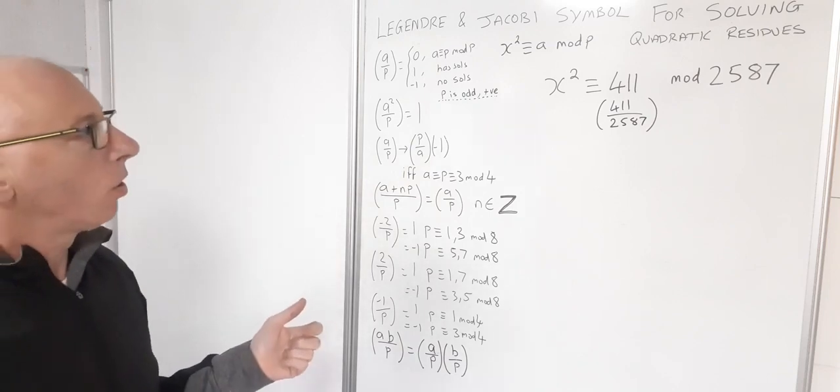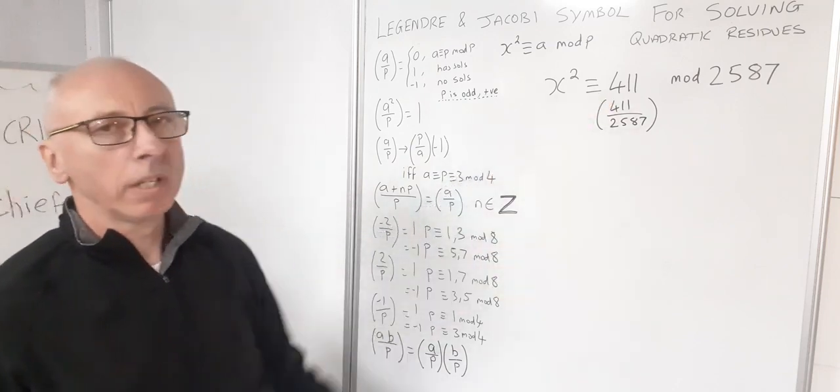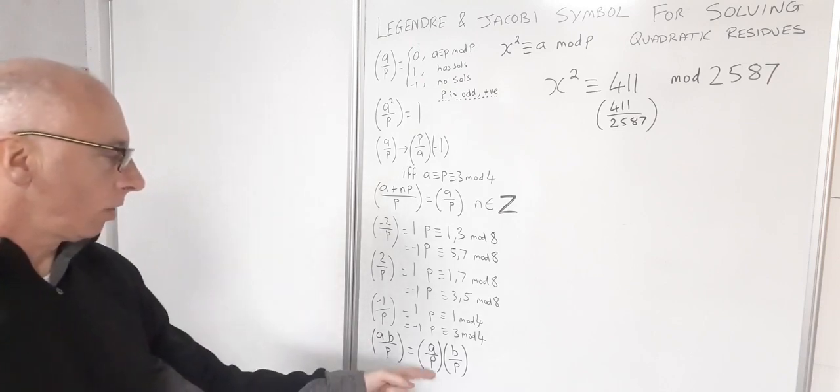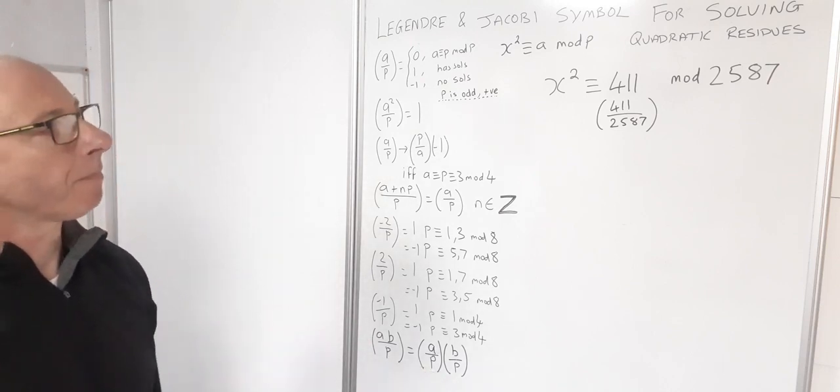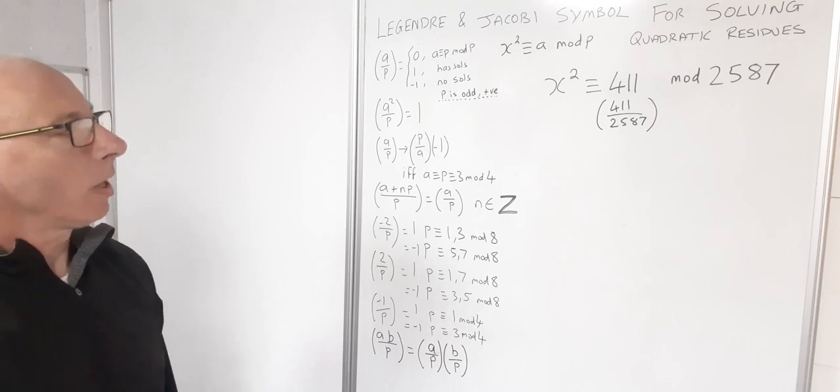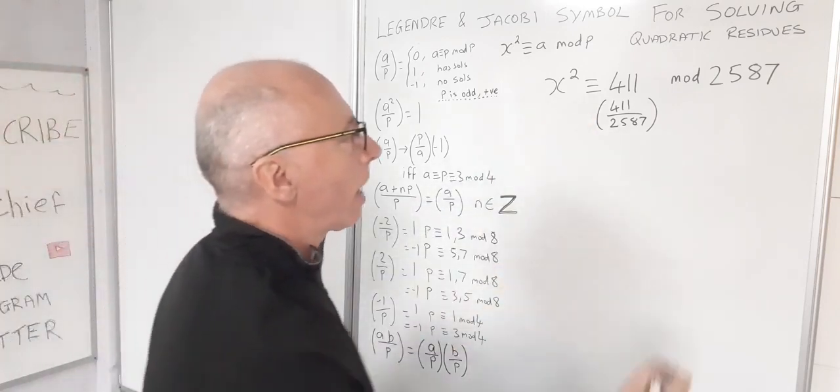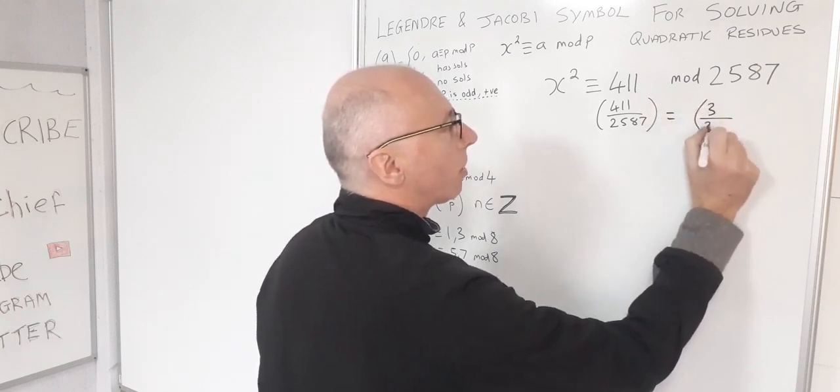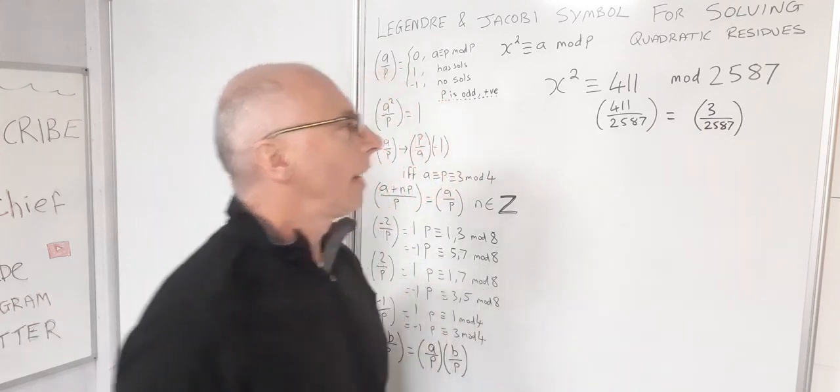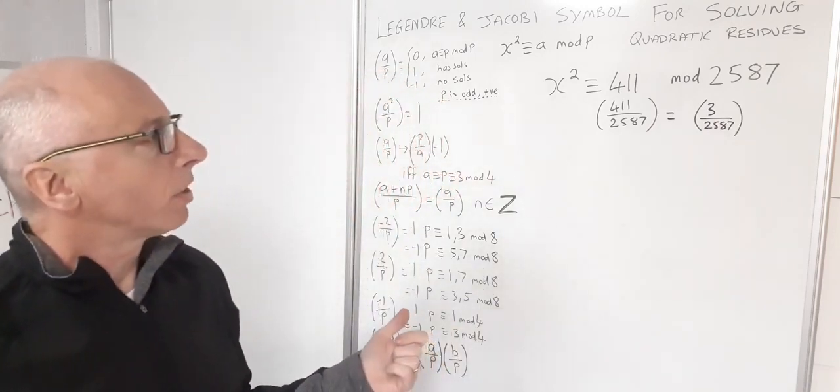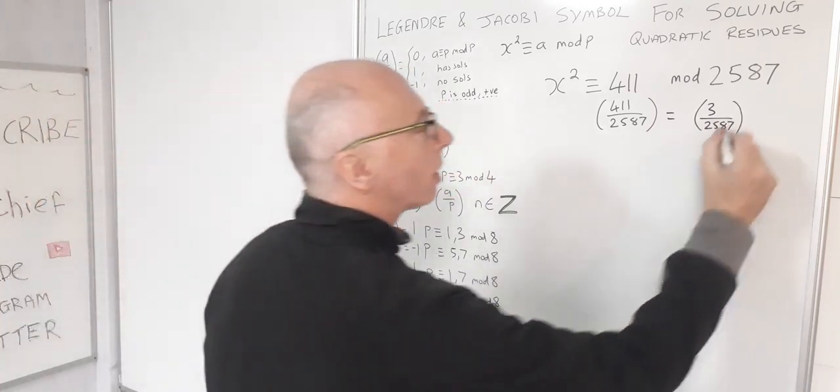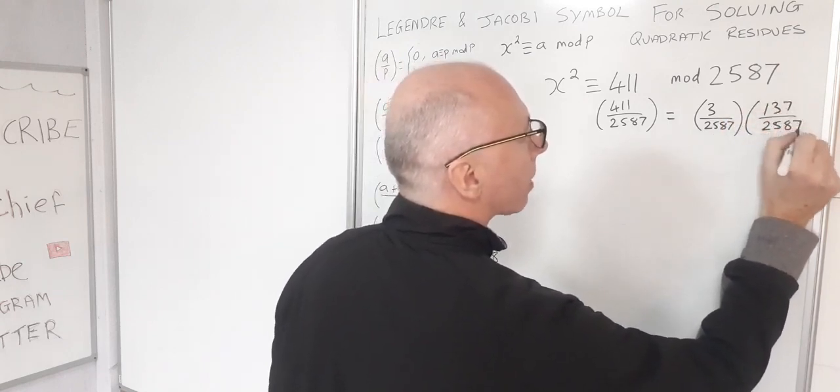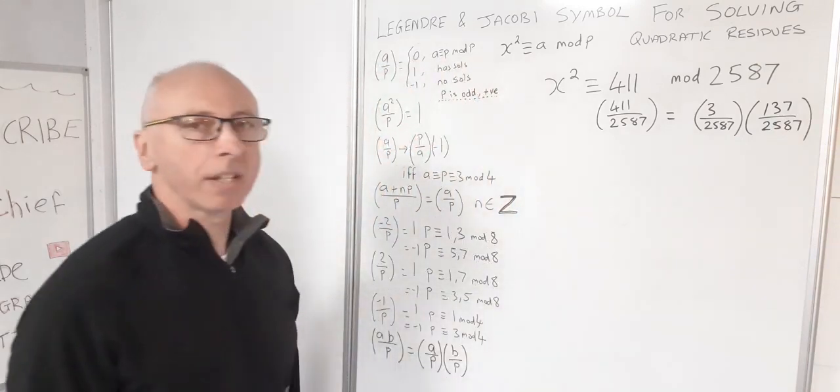Now I can flip it or I can break this up into composite numbers. So I've got here A times B over P, or A over P times B over P. So I can see 411 divided by 3, so I'm going to go that route. So now I've got 3 over 2587 and then the number of 3s in 411 goes 137. So let's put that down as 137 over 2587. So that takes care of that.